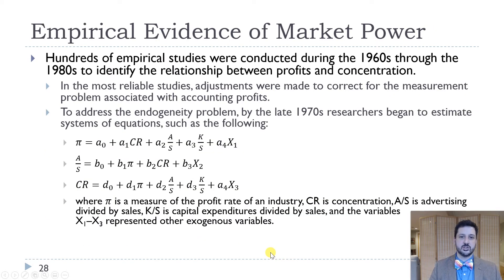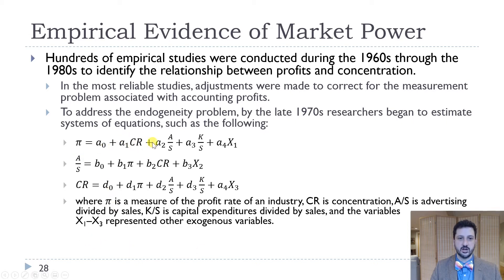A common way to test this throughout the 1960s, 70s, and 80s was to look at a system of equations with profits, advertising, capital expenditure, and other exogenous variables. You would have a profit equation depending on concentration (CR), advertising as A over S (advertising divided by sales), capital over sales (K over S), and exogenous variables X1, X2, and X3. You would solve this system to measure the effect these variables had on each other.